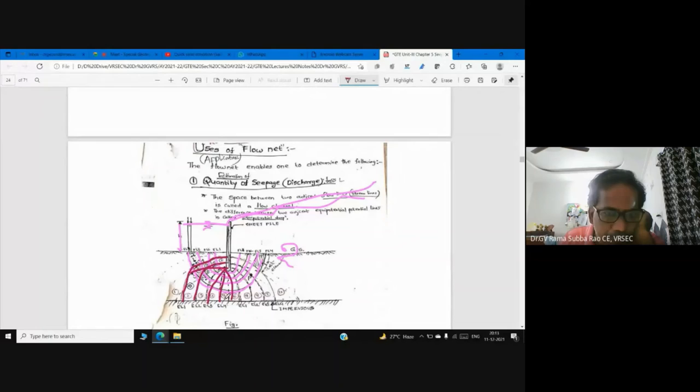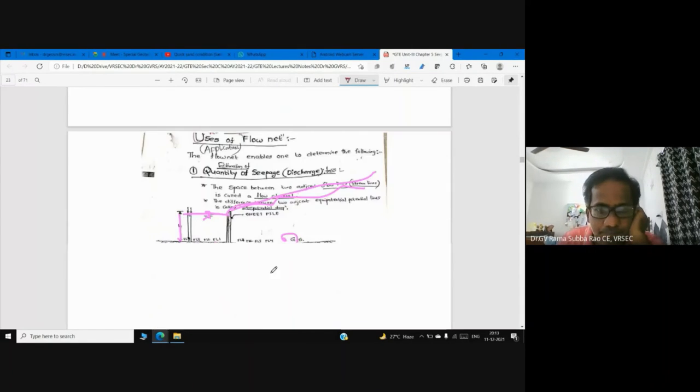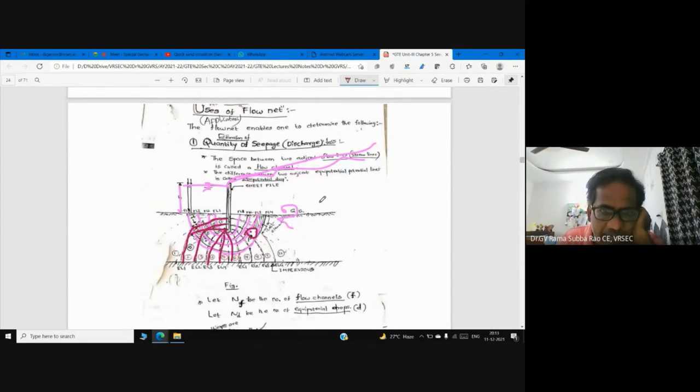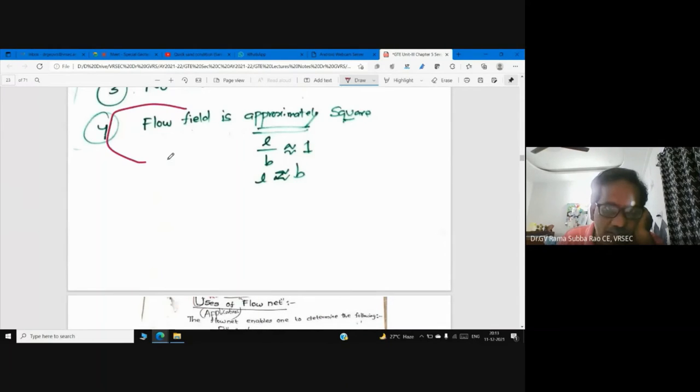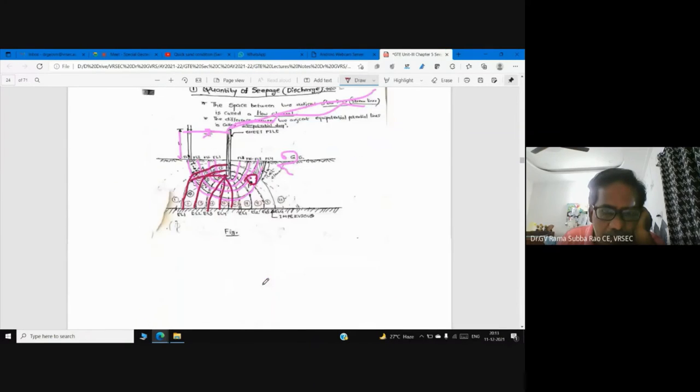Very important rule: What is this space? Flow field. Flow field is approximately square, so L by B is one.